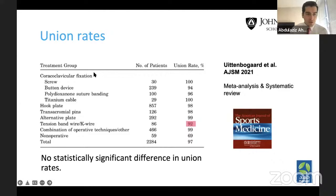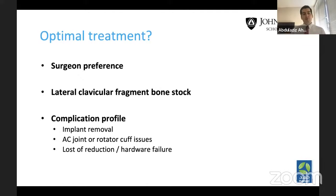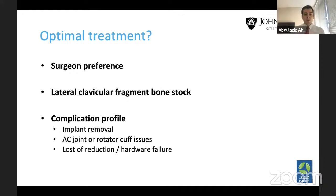In my opinion, the optimal treatment depends on several factors: surgeon preference and training, lateral clavicular fragment bone stock — for example, a pre-contoured plate won't work on a very comminuted fracture — and the complication profile. Implant removal rates are very important since those are subsequent preventable procedures. Symptomatic hardware, AC joint issues, rotator cuff problems, and hardware failure are all concerns. Keeping these factors in mind helps determine the optimal treatment.